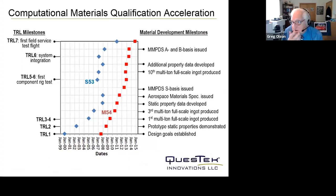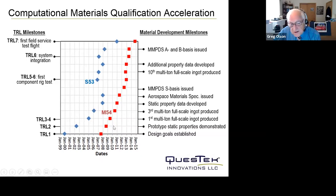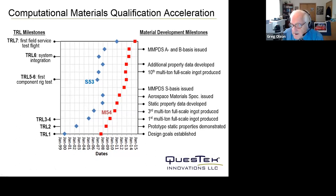Here's the timeline for the two landing gear steels, showing Technology Readiness Levels at the landing gear level alongside corresponding materials milestones. Both steels went from a clean sheet of paper to flight in less than a decade, meeting the MGI goals. Doing it the second time, we moved more quickly — the Navy trusted our predictions well enough to give us the technology for the hook shank application, and we actually had component qualification within a month of material qualification in that case. This has been a case study for the MGI program.